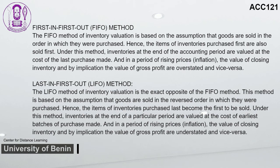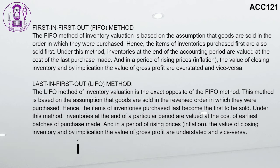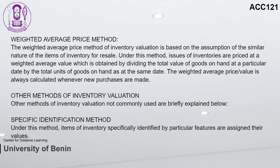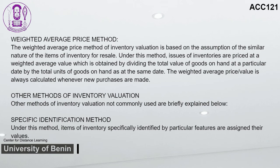The FIFO method is based on the assumption that goods are sold in the order in which they were purchased — items purchased first are sold first. Inventories at end of the accounting period are valued at the cost of the last purchase made. In a period of rising prices (inflation), the value of closing inventory and gross profit are overstated. The LIFO method is the exact opposite: goods are sold in the reversed order of purchase, and inventories at end of a period are valued at the cost of the earliest batches. In a period of rising prices, closing inventory and gross profit are understated. The weighted average price method prices issues of inventories at a weighted average value obtained by dividing the total value of goods on hand by total units on hand, recalculated whenever new purchases are made.